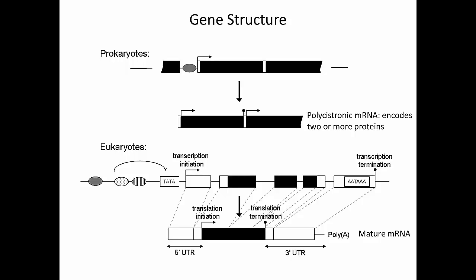In this slide, we're looking at the gene structure in both prokaryotes and eukaryotes. The major difference is that in prokaryotes, genes are arranged as clusters, while in eukaryotes, they're arranged as discrete units. In prokaryotes, transcription produces a single messenger RNA molecule called the polycistronic messenger RNA that encodes two or more proteins, while in eukaryotes, the product of transcription and processing is the mature messenger RNA that usually encodes for a single protein.